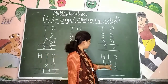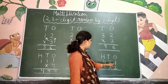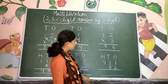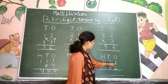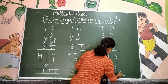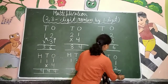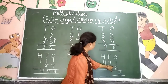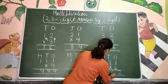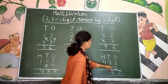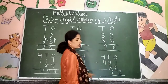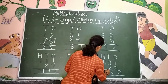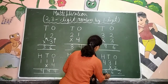Again, four hundred thirty one multiplied by 2. Ones की ones के साथ — 2 ones are 2. 2 threes are 6. And 2 fours are 8. Answer: eight hundred sixty two.